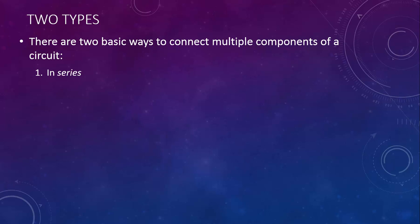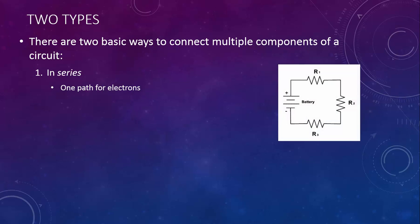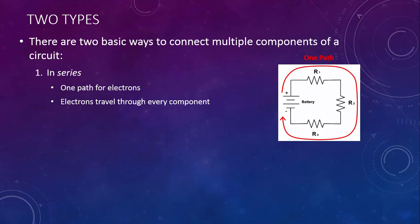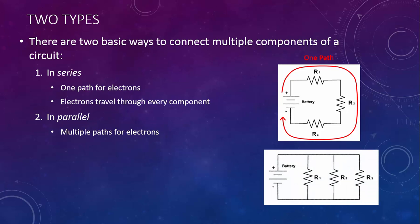Components can be connected in series, which means that there is one path for electrons to flow. Electrons will travel through every component. The other way we could connect multiple components is in parallel, which means that there are multiple paths for electrons. Electrons only travel through one component or another.